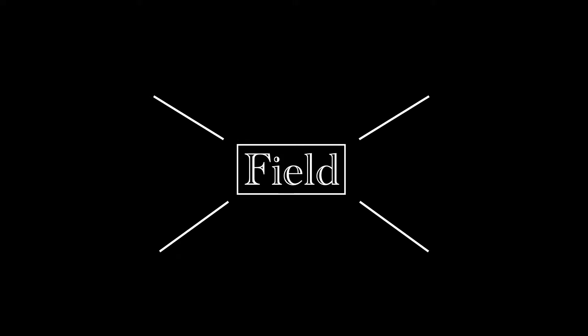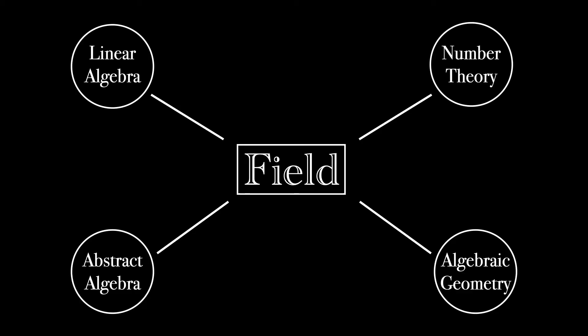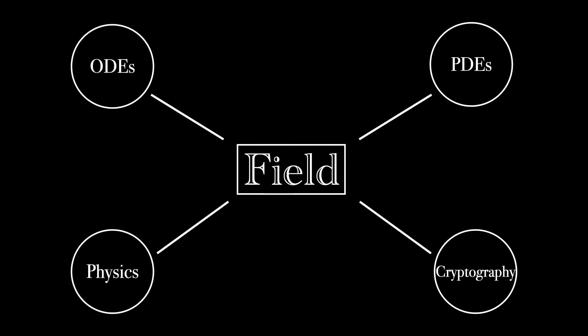An important algebraic structure that occurs throughout modern mathematics is that of a field. It has numerous applications in a wide variety of areas, ranging from pure math subjects like linear algebra, abstract algebra, and number theory, to more applied areas like differential equations, physics, and cryptography. In this video, I will teach you exactly what a field is and go through a few simple proofs showing which common mathematical structures are fields.